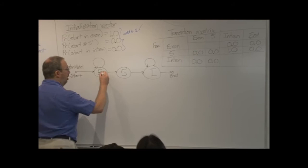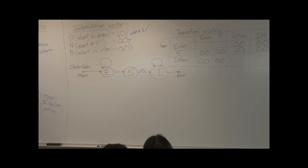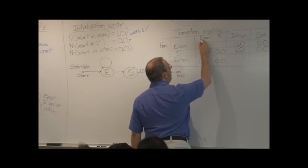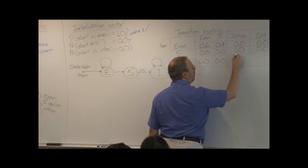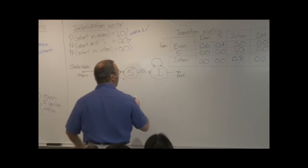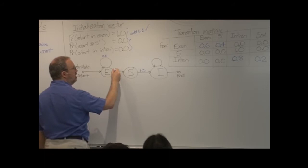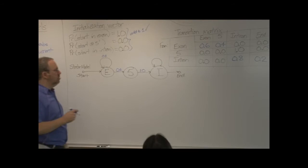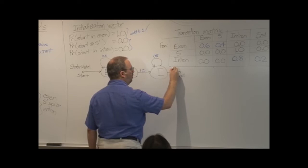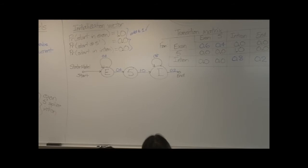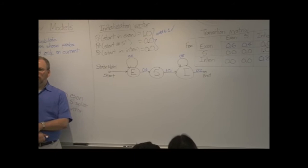Now, a little harder is figuring out what the probabilities are of these other situations. And that's going to depend on your biological knowledge. I'm going to give you some numbers here. And then talk about what they mean. 60% probability of staying in an exon. 40% probability of going from an exon to a splice. 80% of staying at an intron. 20% chance of going from an intron to an end.